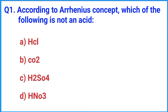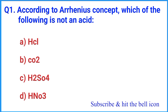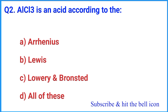Question number 1: According to Arrhenius's concept, which of the following is not an acid? The right answer is option C: H2SO4. Question number 2: AlCl3 is an acid according to the right answer is option C: Lowry and Bronsted.